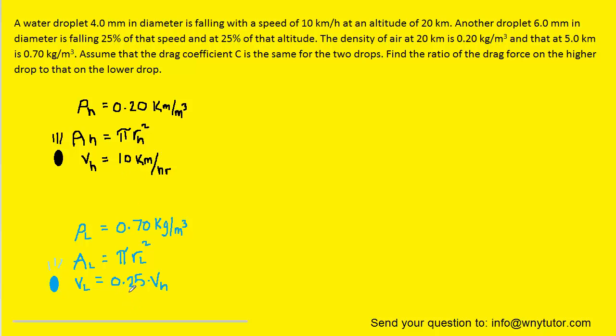And of course the higher drop has a speed of 10 kilometers per hour, so that means the lower drop is going to be 25% of that value, or 0.25 times the 10 kilometers per hour. And if you multiply that, you get 2.5 kilometers per hour. So we can actually let the speed of the lower drop be 2.5 kilometers per hour.